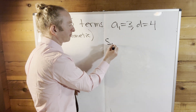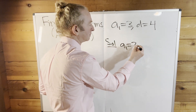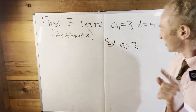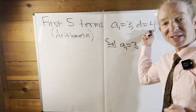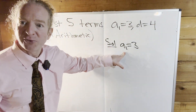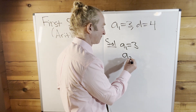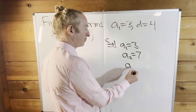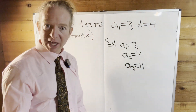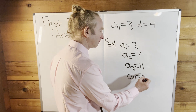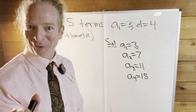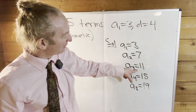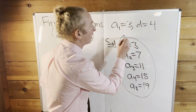So let's write the answer. The first term is three — we get that for free, they give it to us. So we're already 20% done. To find the next term, d equals four, so we just add four. Three plus four is seven — that's the second term. Seven plus four is 11, that's a sub three. Add four again, we get 15. Add four again, and we get 19. So: 3, 7, 11, 15, 19 — that's the first five terms.